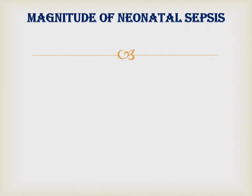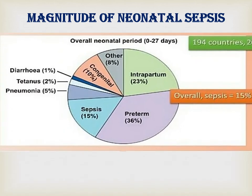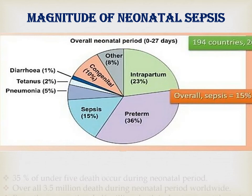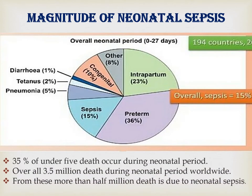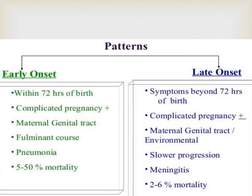Regarding the magnitude of neonatal sepsis, one large study conducted in 194 countries showed that neonatal sepsis is responsible for around 15% of overall neonatal disease. Thirty-five percent of under-five deaths occur during the neonatal period. Overall, 3.5 million deaths occur during the neonatal period worldwide, and more than half a million of those deaths are due to neonatal sepsis.